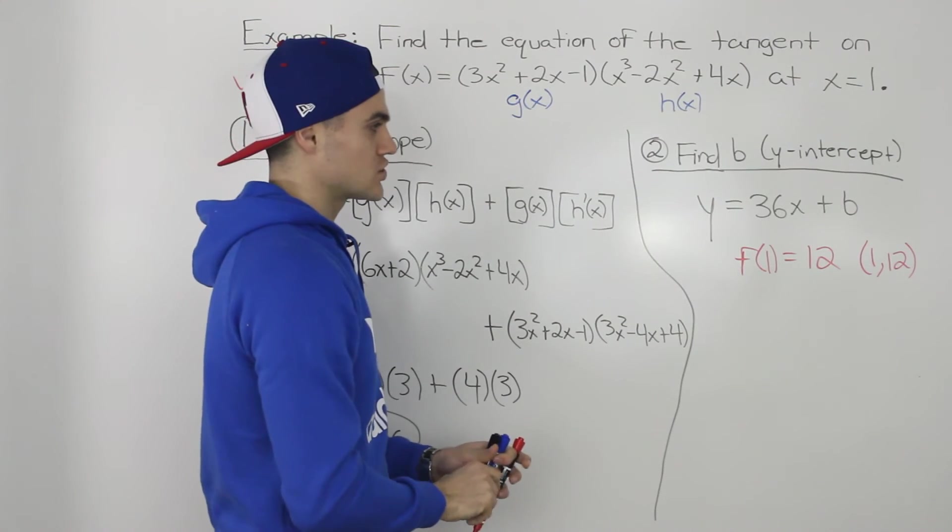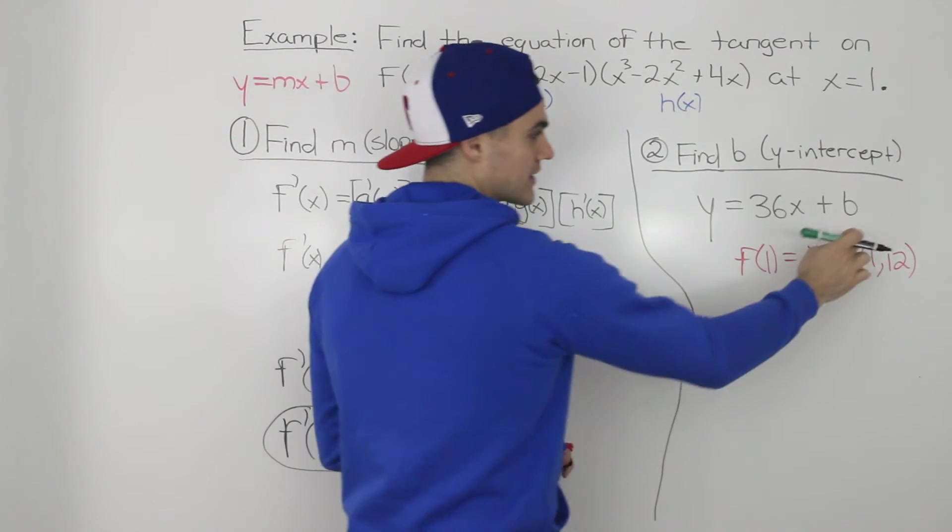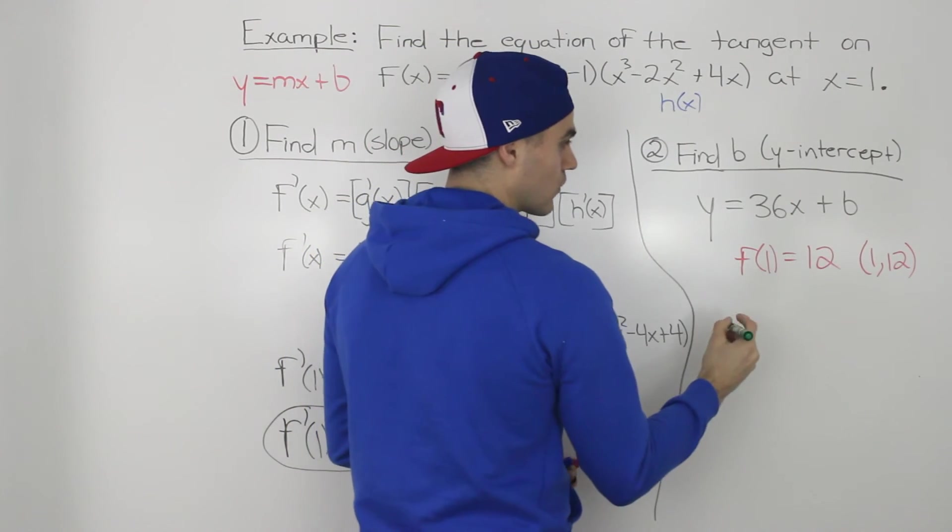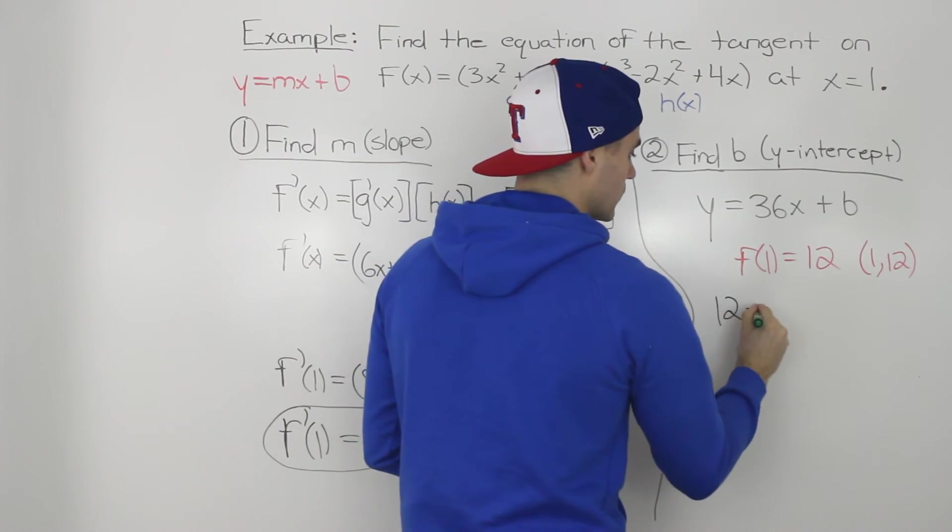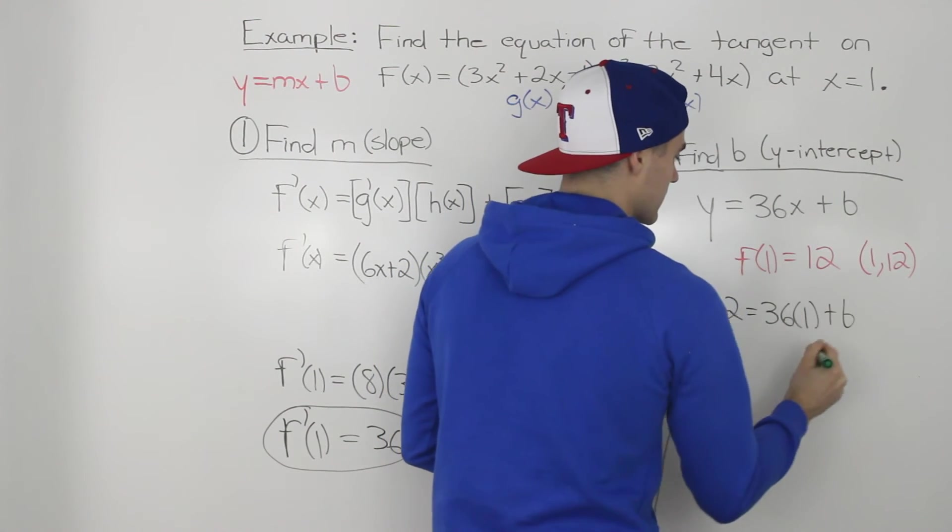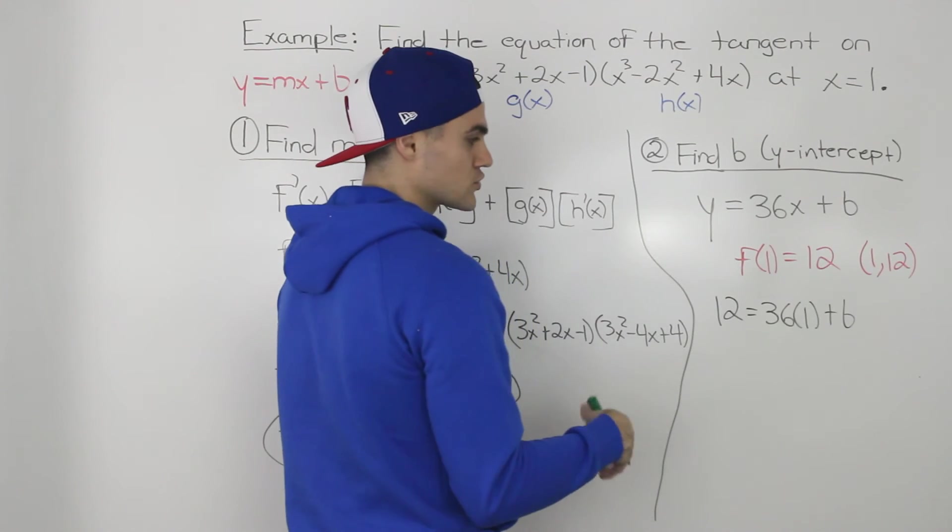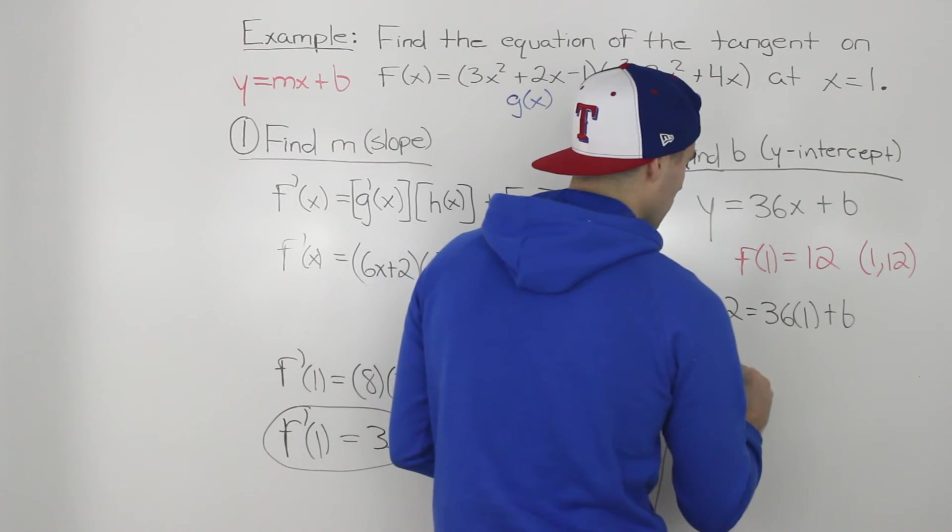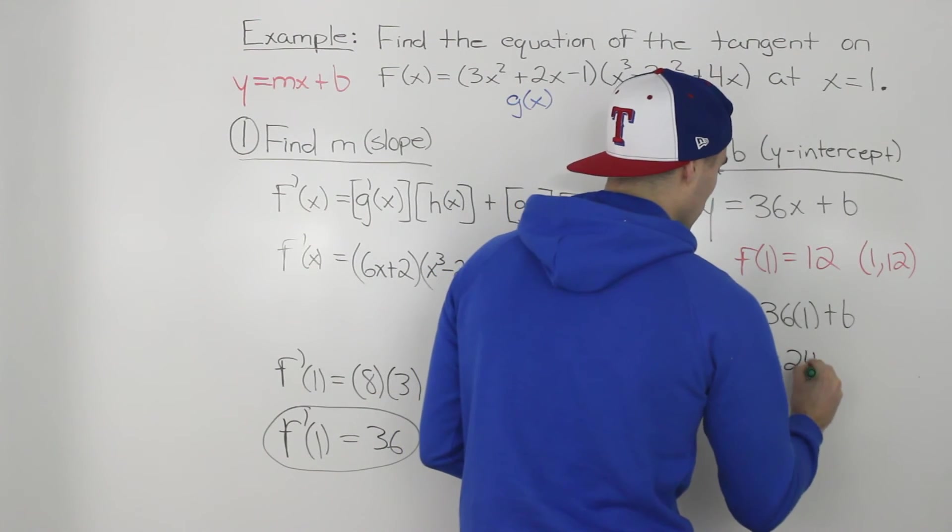Now we can just take that x value of 1 and that y value of 12, plug it in here, and solve for b. So 12 equals 36 times 1 plus b. Bringing the 36 over, 12 minus 36 would give us negative 24. So we know b is equal to negative 24.